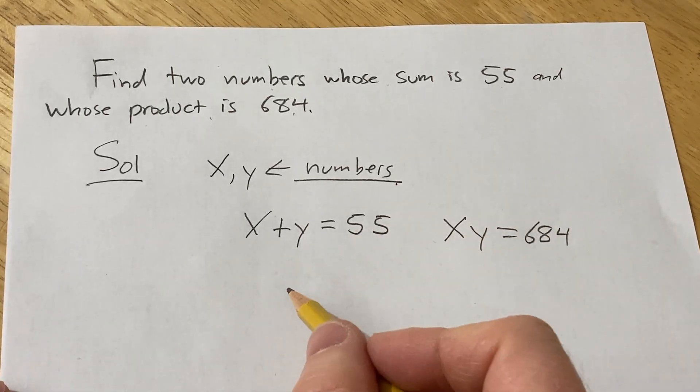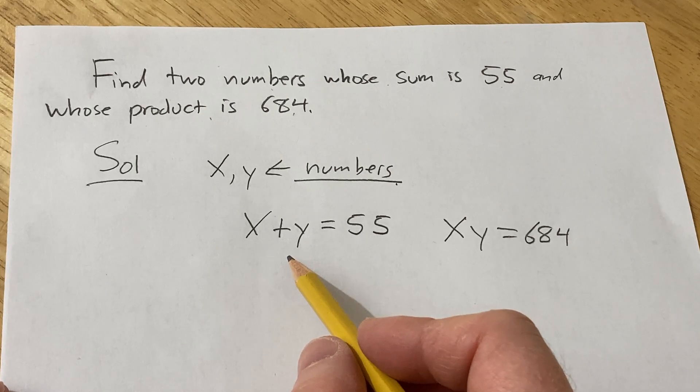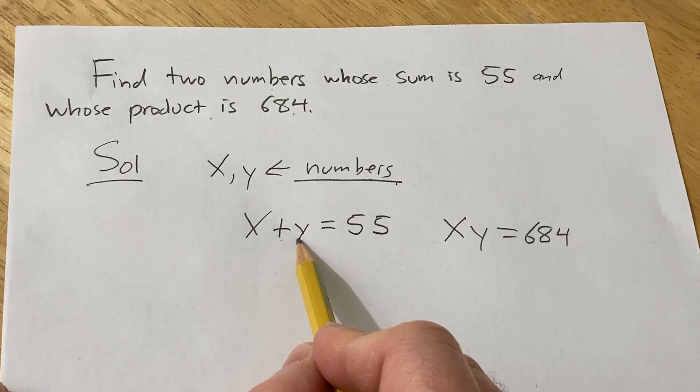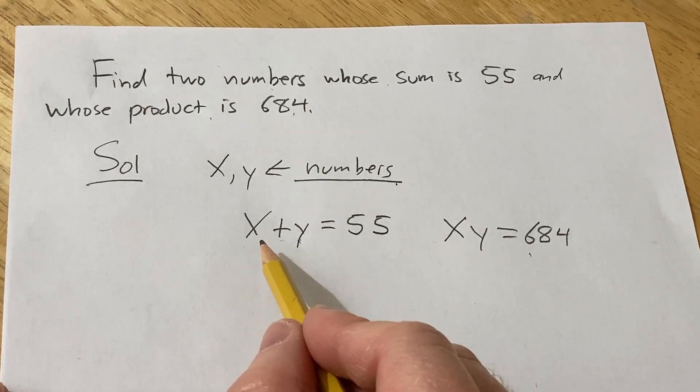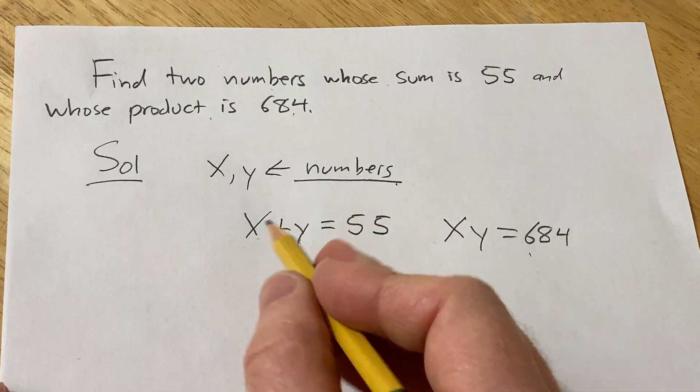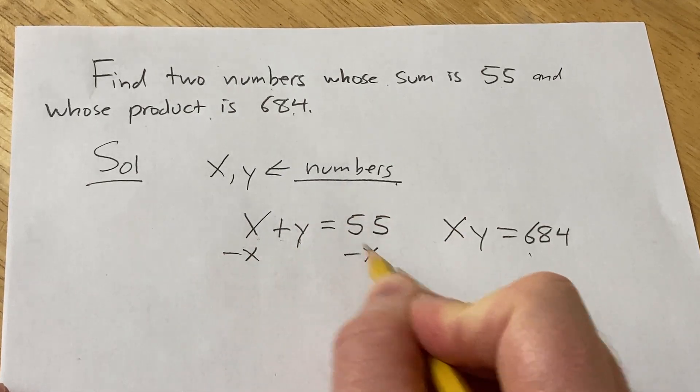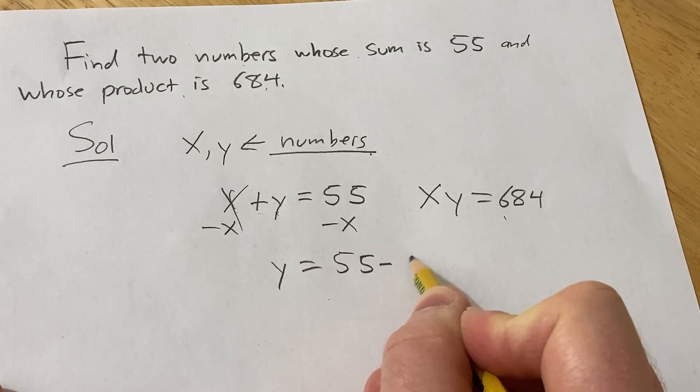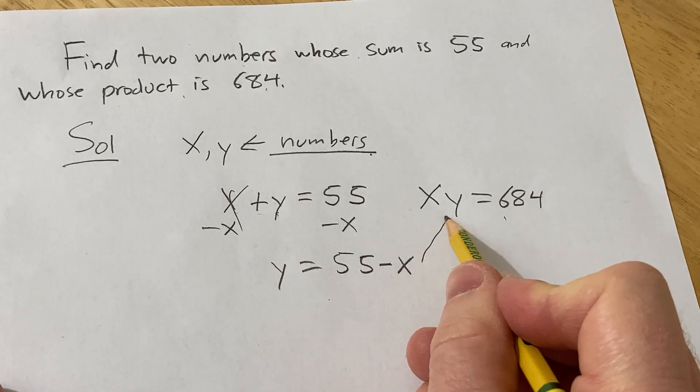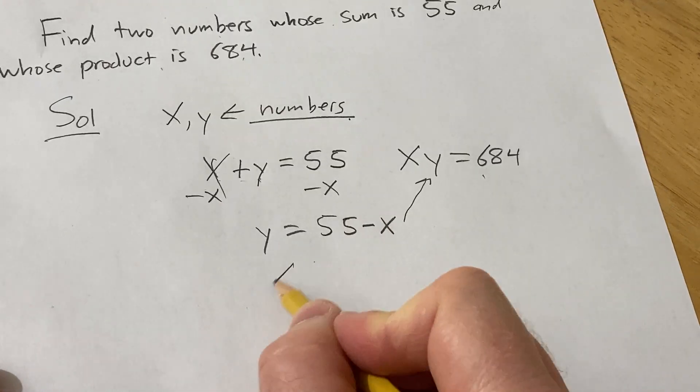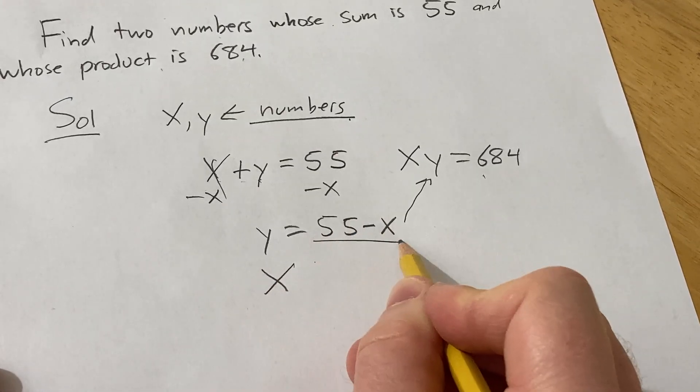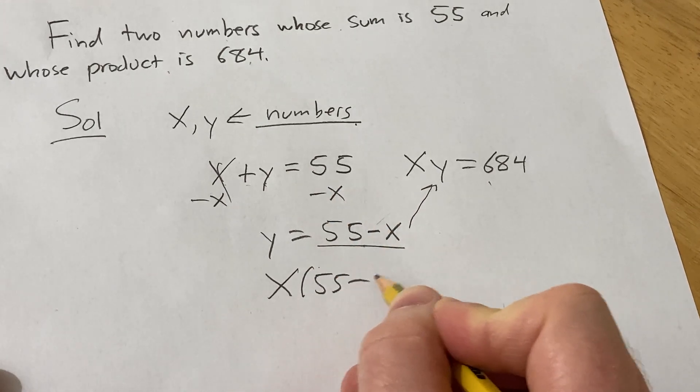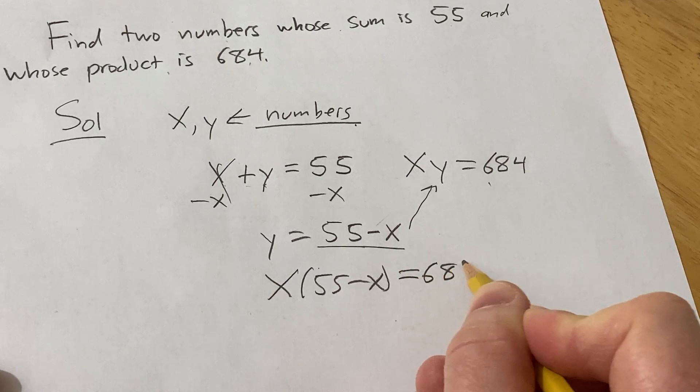So now we just have to solve these equations. I'm thinking there's a couple ways to do this. Maybe what we can do is solve this one for one of the variables and plug it in here. So I'm going to solve for y, so we'll subtract x, and we get y equals 55 minus x. Now we're going to take this and plug it in here. So we have x times y, which is this piece here, so I'm going to replace the y with 55 minus x, and that's equal to 684.